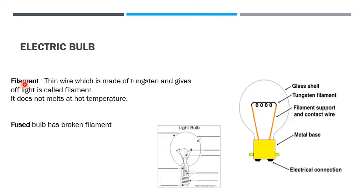So, what is a filament? Filament is a thin wire which is made up of tungsten and gives off light. It does not melt at room temperature.